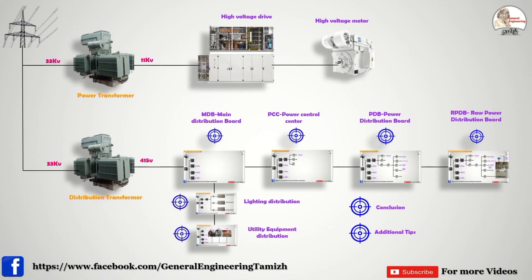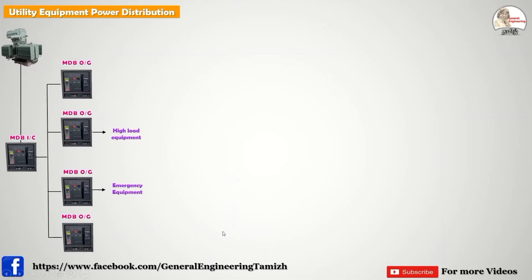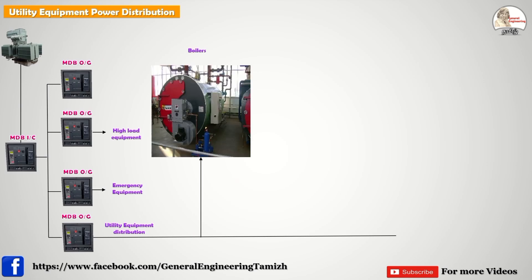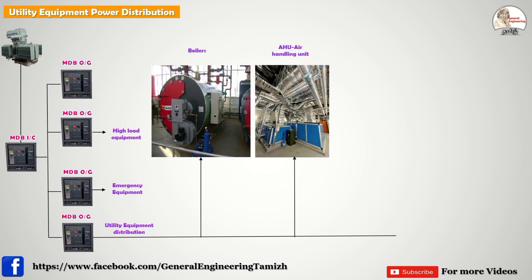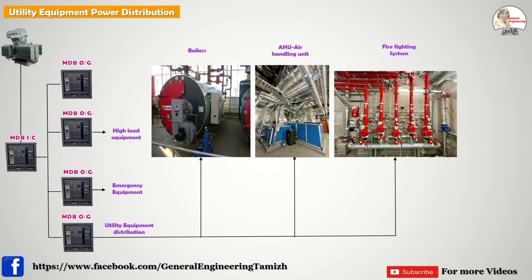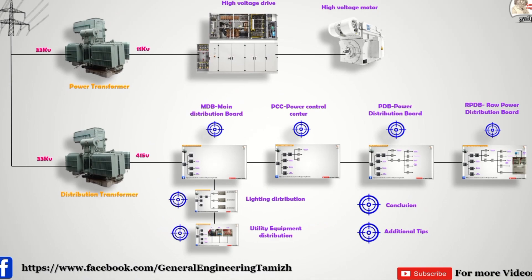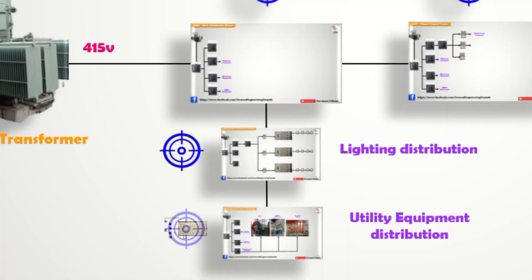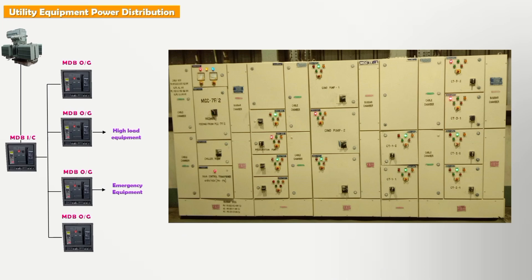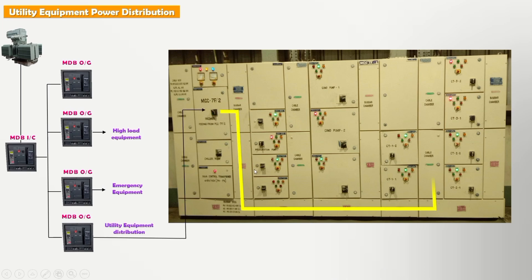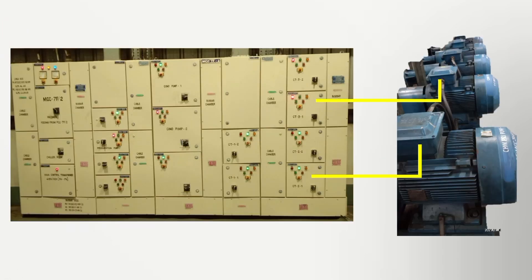Now lighting distribution is completed. Lastly, utility (Euclide) equipment must always be connected from the MDB with a separate distribution network. Euclide equipment includes boilers, HVAC systems, building cooling systems, water treatment plants, and fire/heating systems. Euclide panels are similar to PCC and PDB, but since Euclide equipment is mostly motors and pumps, the panels themselves maintain starters, and motors are connected from those starters.